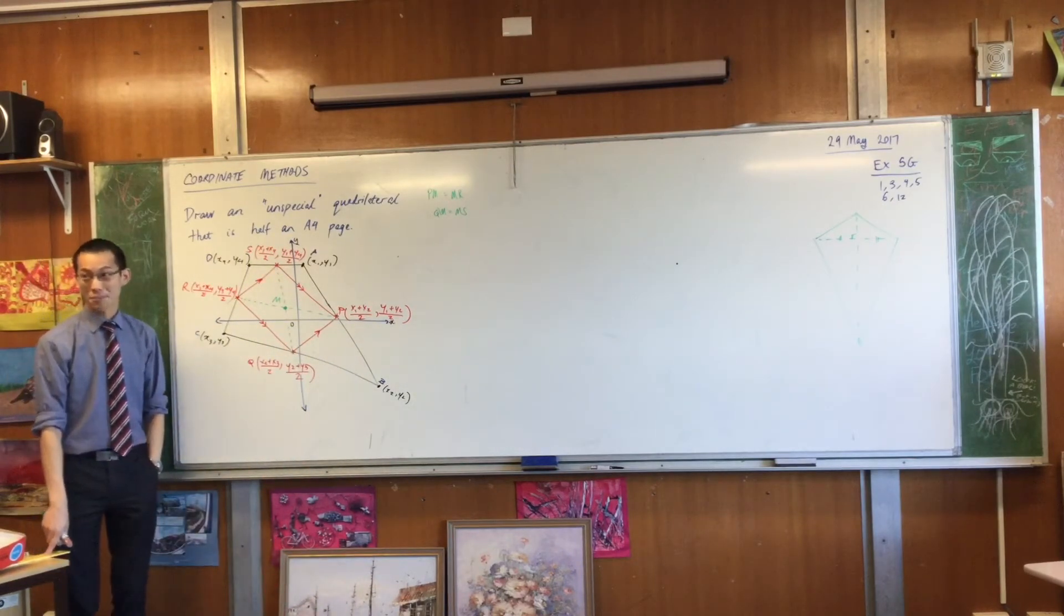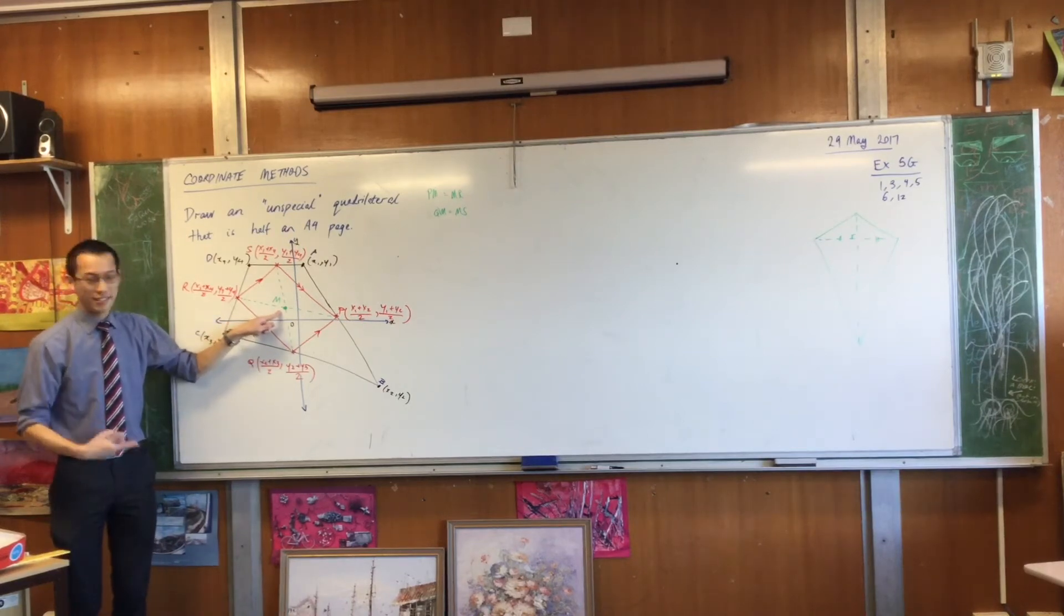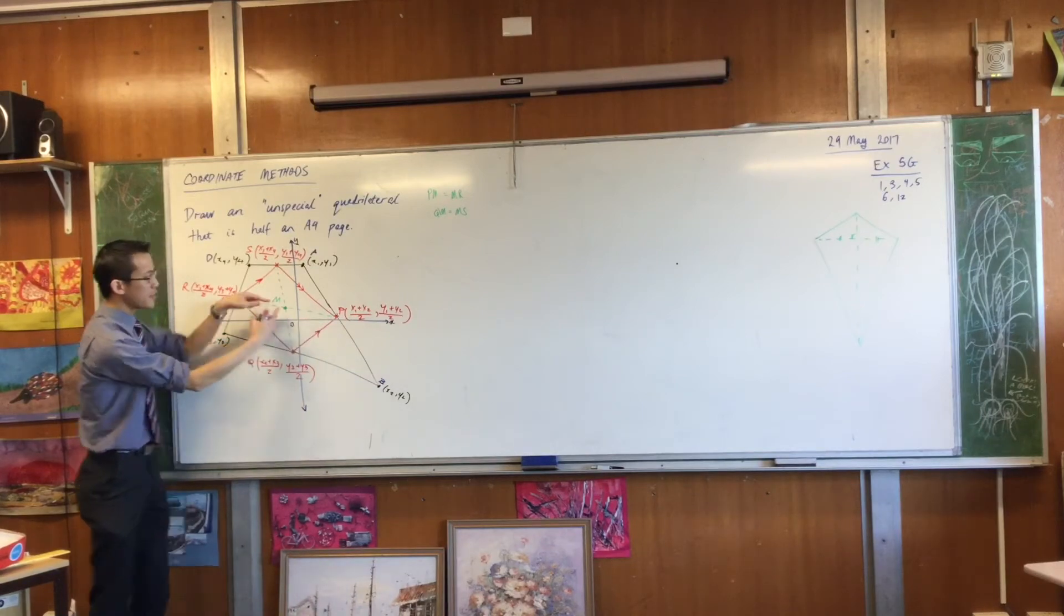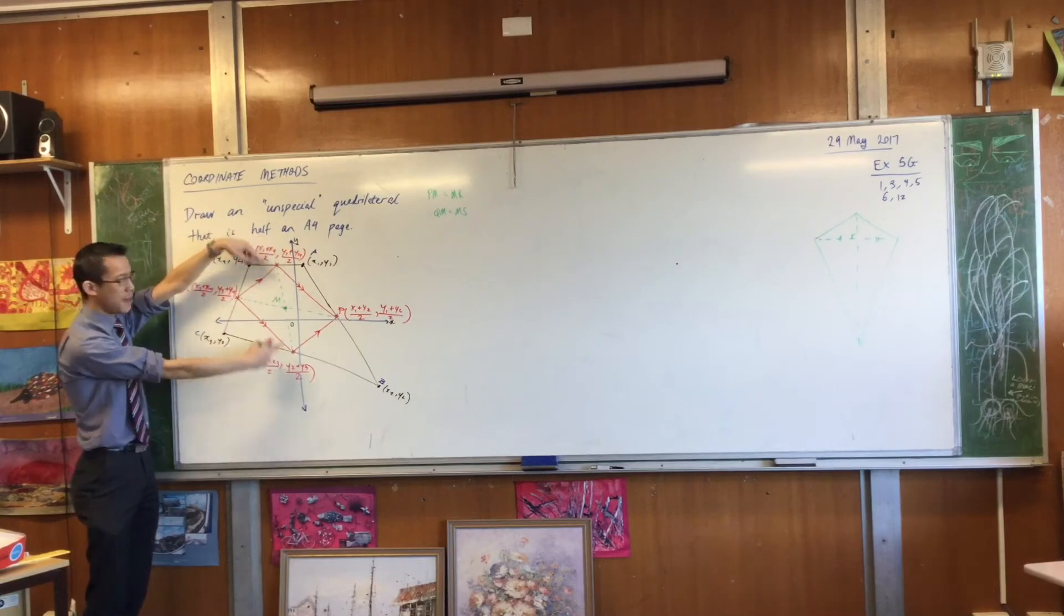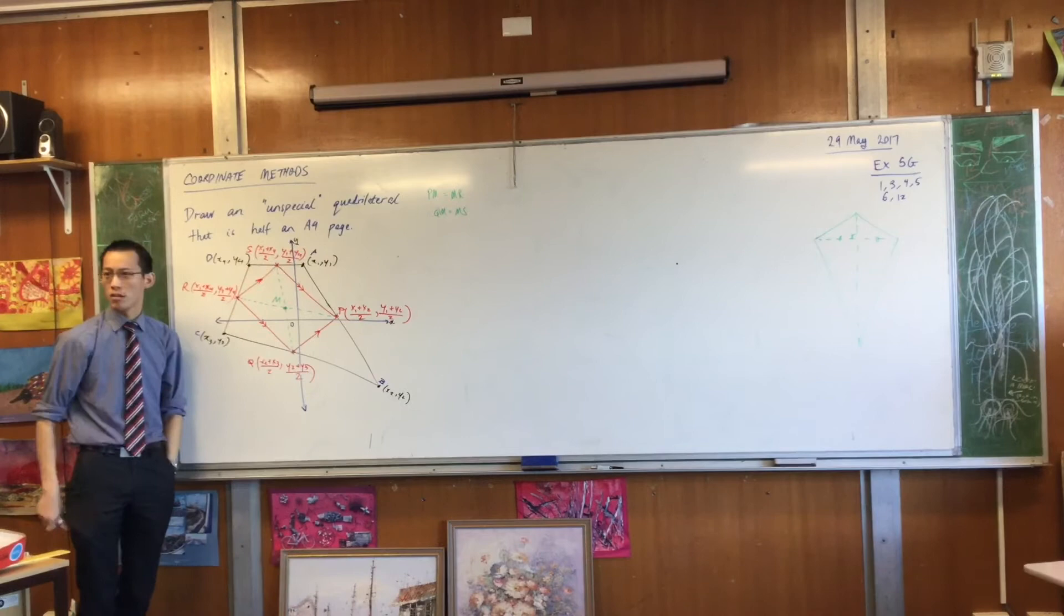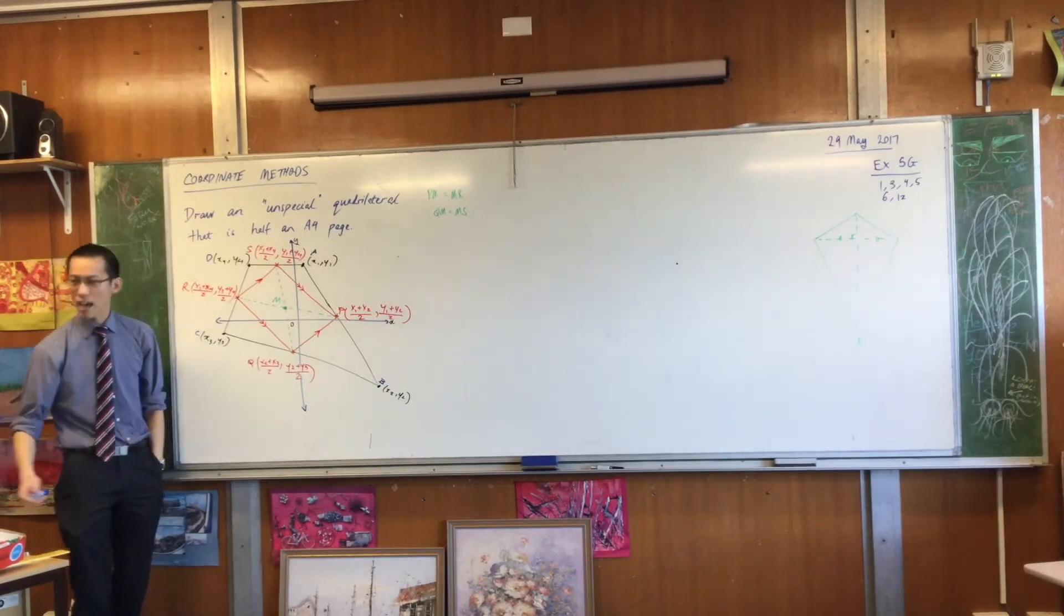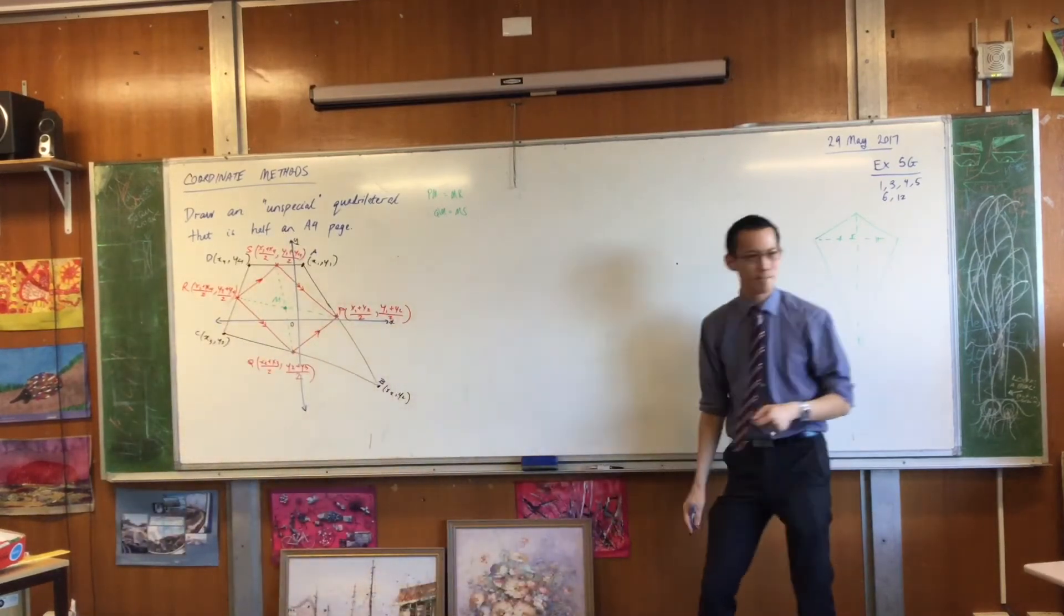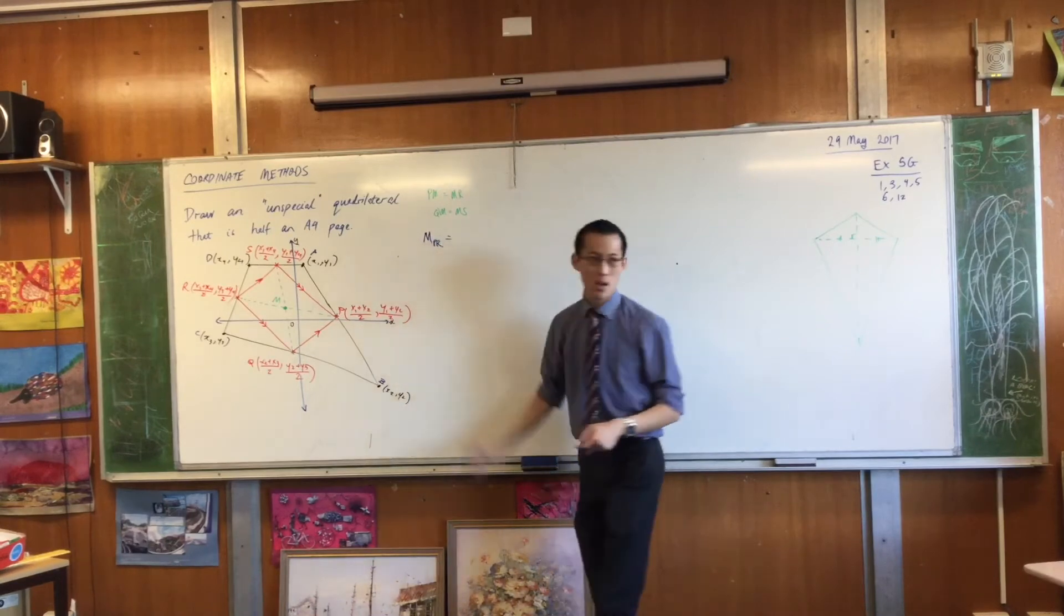So what's a better way? This point here, I'm alleging it's the midpoint of PR. That's what I'm alleging. If it's also the bisector of this interval here, this diagonal, then it should be the midpoint of this set of coordinates as well. How do I show that they're the same? What is the midpoint of PR?